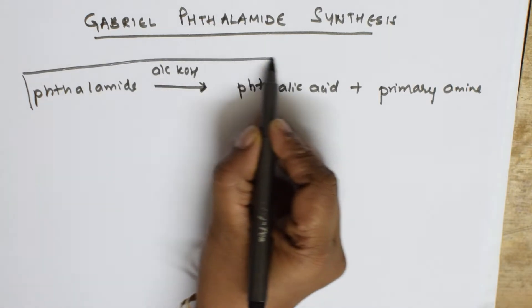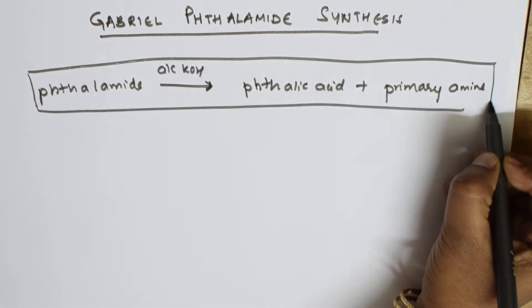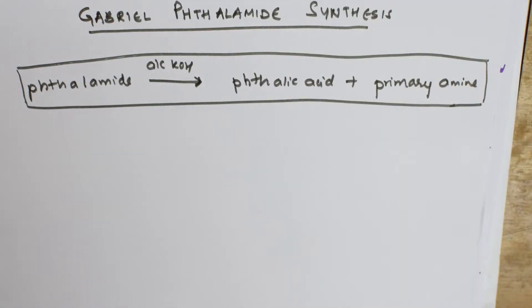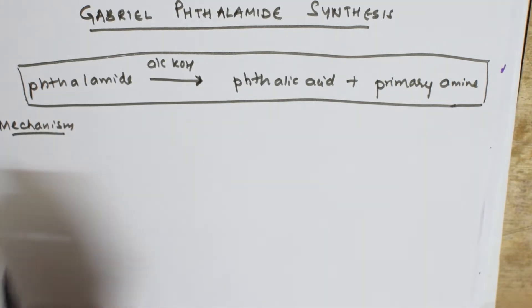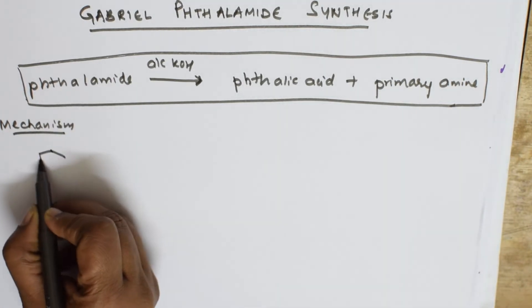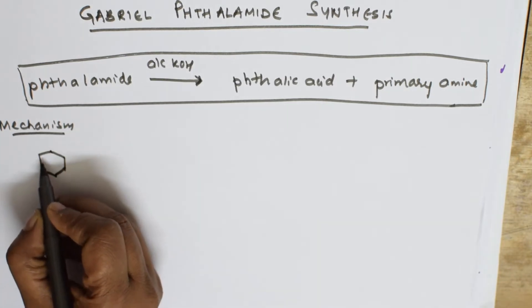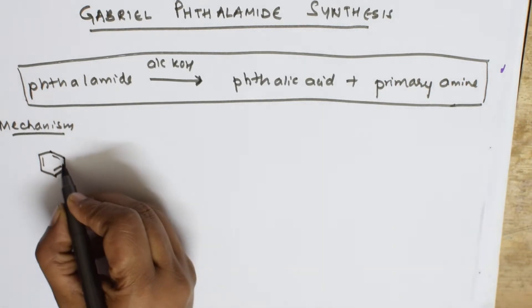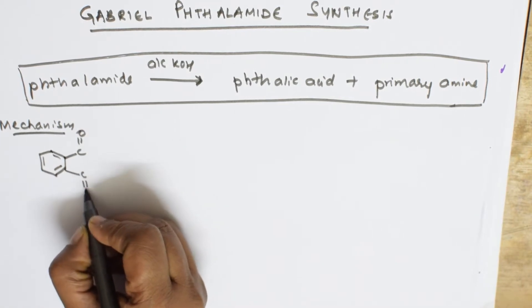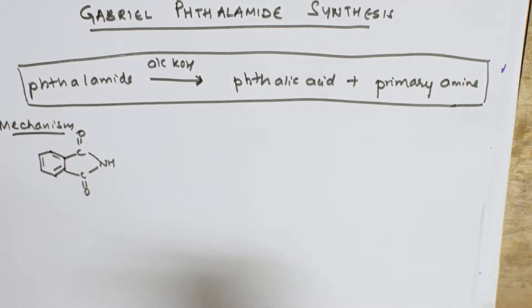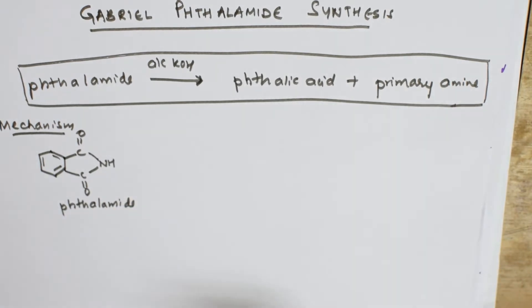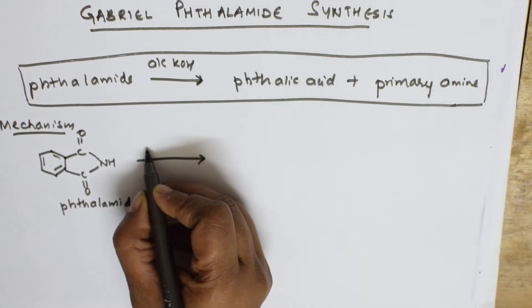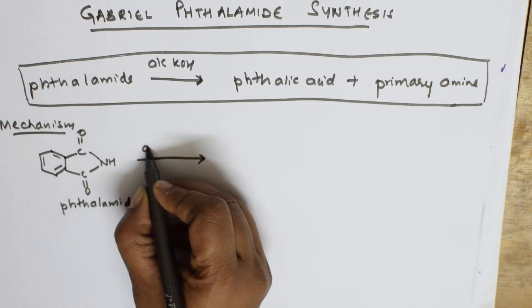Let's see step by step. Let us also see the reaction mechanism — in between what steps it is going to follow. The first important thing to remember is: we start with phthalimide. How does phthalimide look? The compound has a benzene ring with alternate pi bonds, linked to C=O, another C=O, and NH. This compound is called PHTHALIMIDE. To this phthalimide we are going to introduce alcoholic KOH.